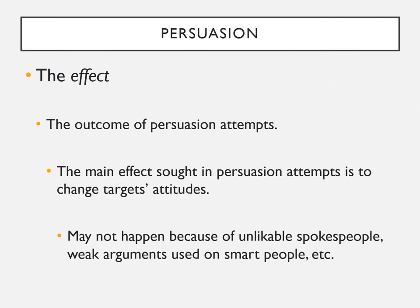Now let's talk about the 'effect.' The goal of persuasion attempts is to change targets' attitudes about a particular object — often because people believe that changing attitudes will also change behavior. For example, political campaigns attempt to persuade people to have a positive attitude toward a candidate so they will vote for that candidate. Of course, not all persuasion attempts are successful, and the reasons for failure are often the flip side of what makes them successful — for instance, having unlikable spokespeople may cause failure, especially for targets prone to taking the peripheral route.